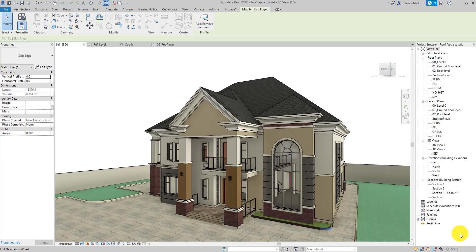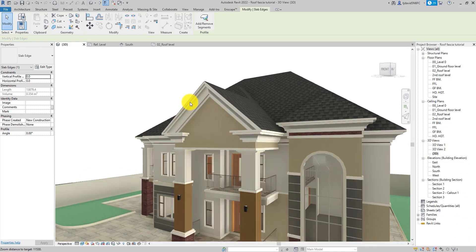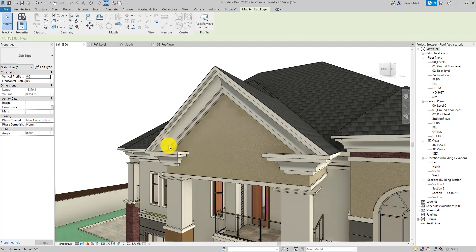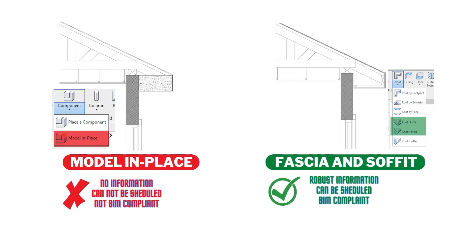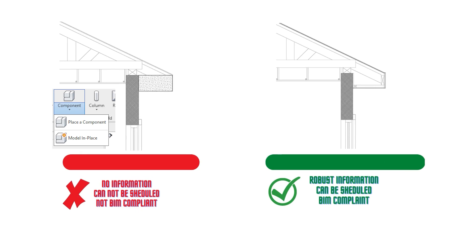Hello guys, welcome back to Simple or Difficult, it's Kelechi here. In this video I'm going to be showing you how to model molded roof fascia in Revit. I'm also going to be showing you some tips and tricks on how to achieve these end details, and I'm going to be doing all this without the use of the model-in-place tool. The model-in-place tool is quite effective, but as I've mentioned in my previous videos it's not BIM-friendly. We are trying to get as much information as we can from our building models, so we advise against using it. I'm going to be showing you an effective alternative on how to achieve this properly. So without wasting much time let's head into the video.